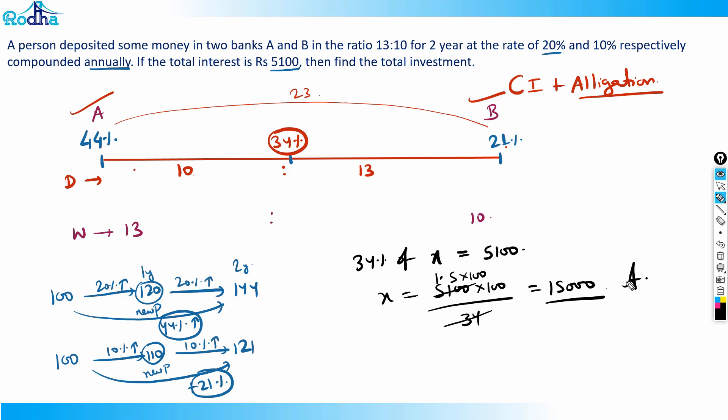This is a very good application of allegation in compound interest. Many people don't think this way. Whenever you have a mixture of two things that combine to give a third thing, you can use allegation. Here, money in banks A and B combine to give the total interest. In typical allegation questions, like mixing two qualities of rice to make a third quality, the same principle applies—money from bank A and bank B are used to make the combined part.